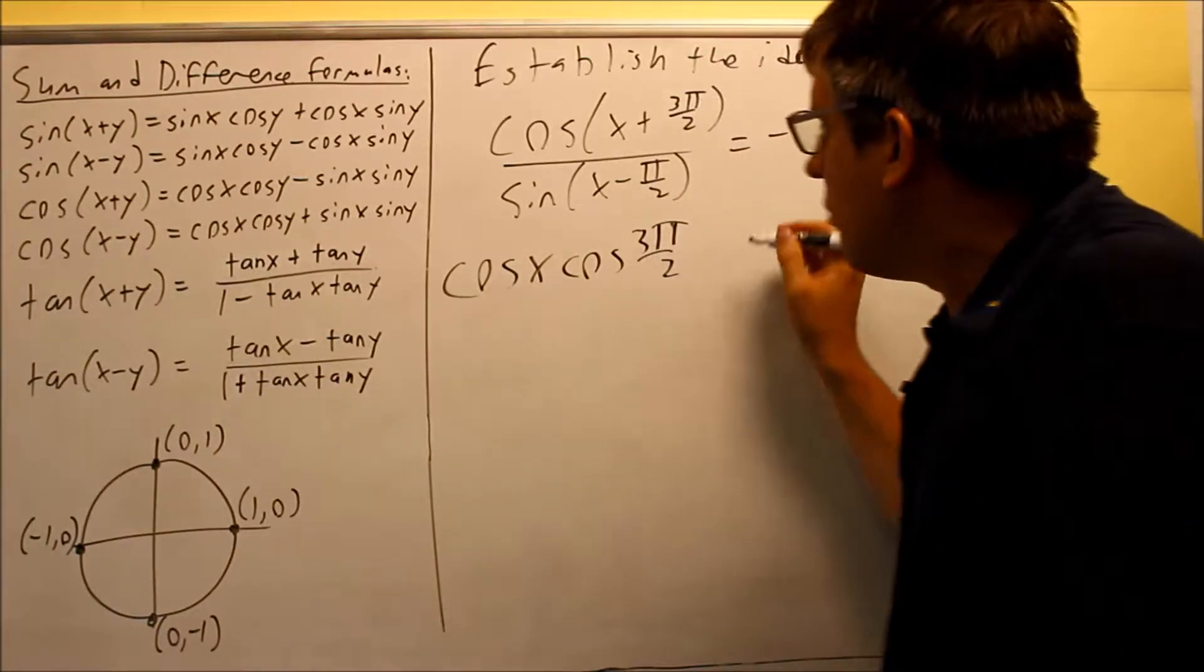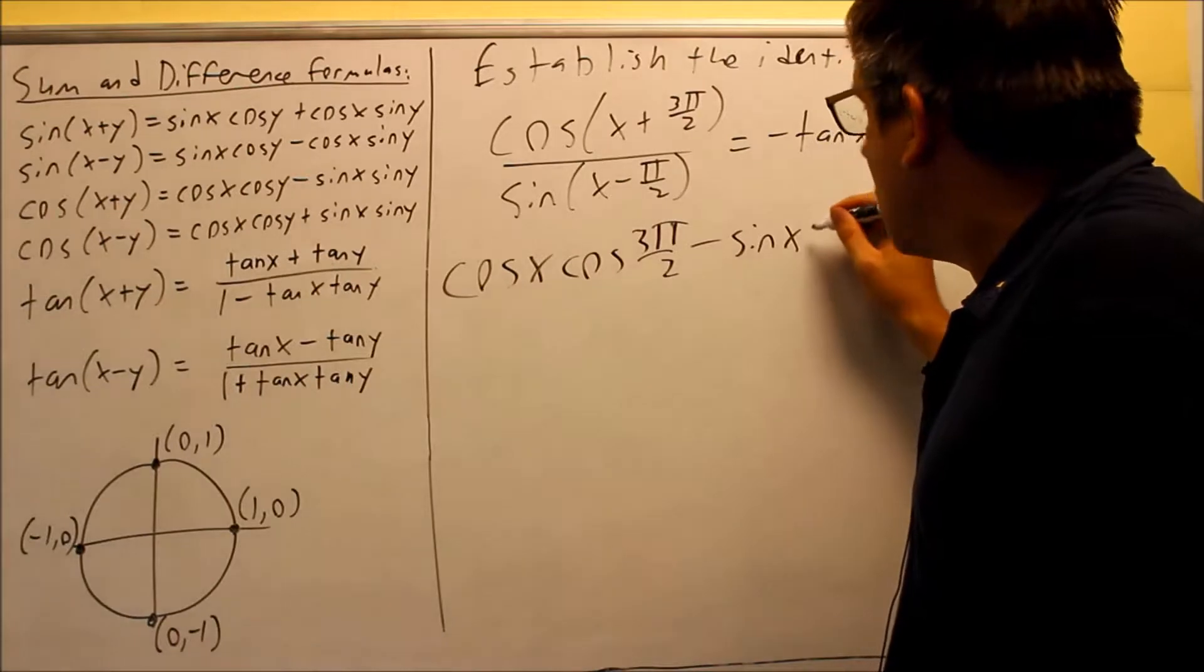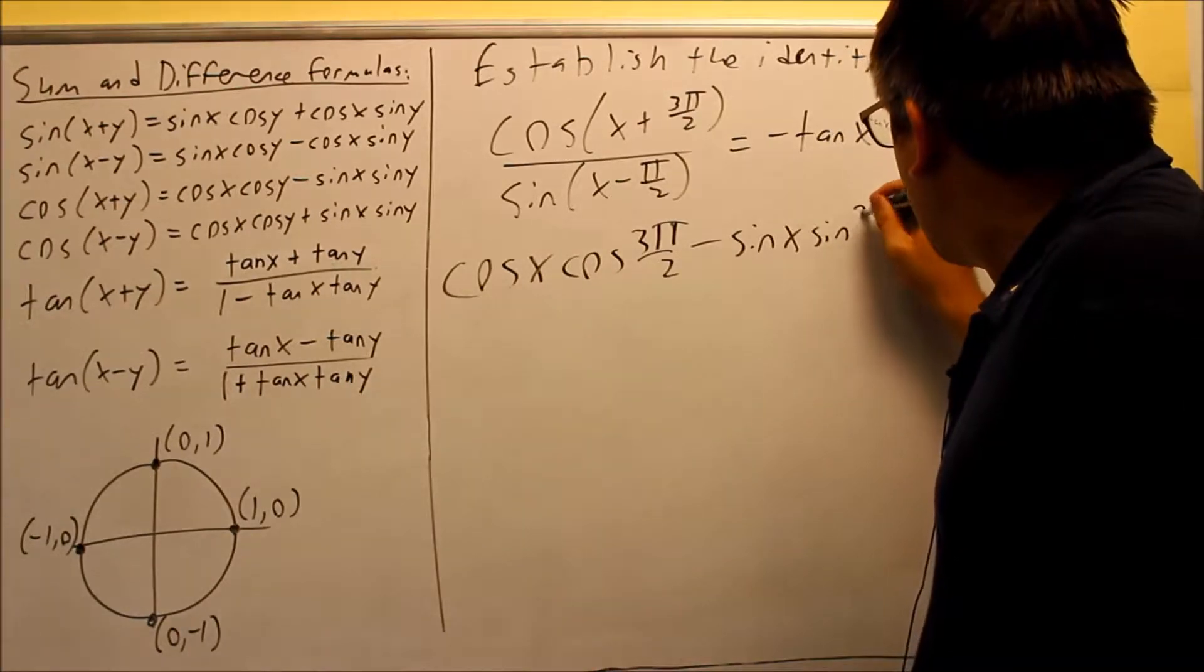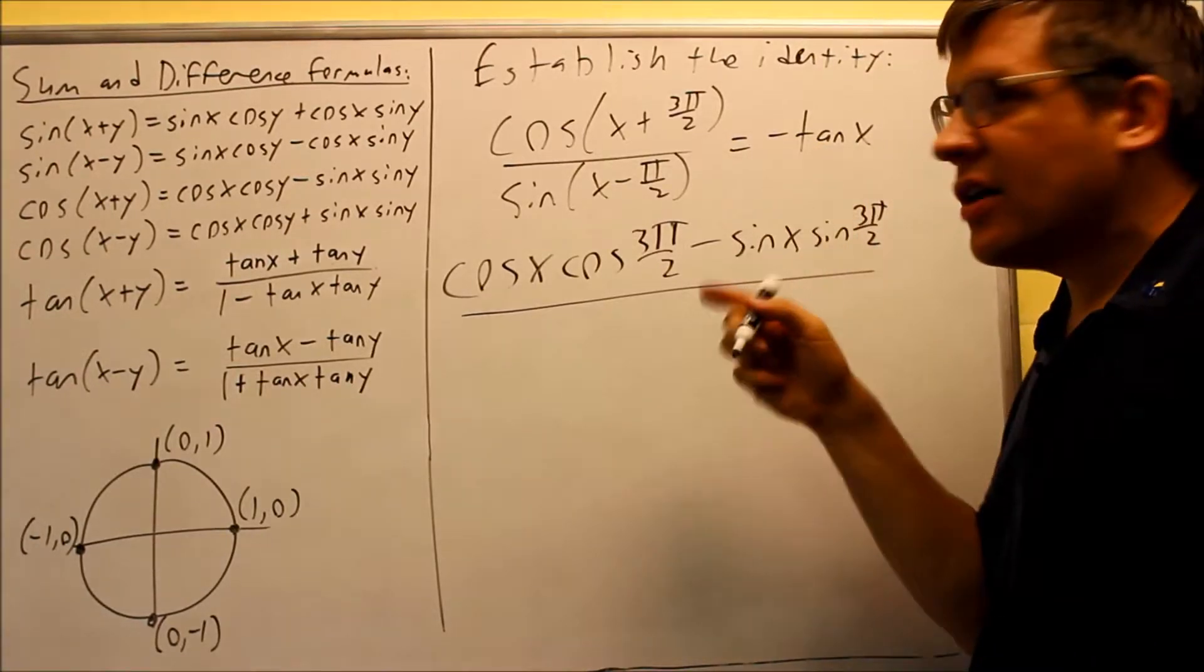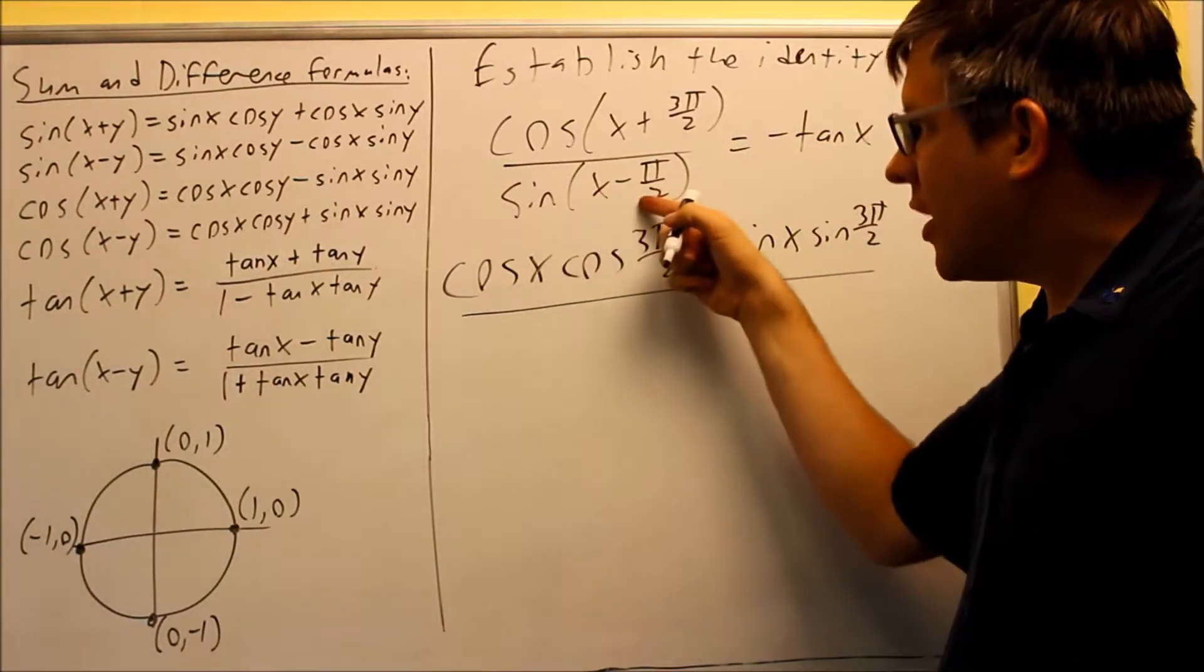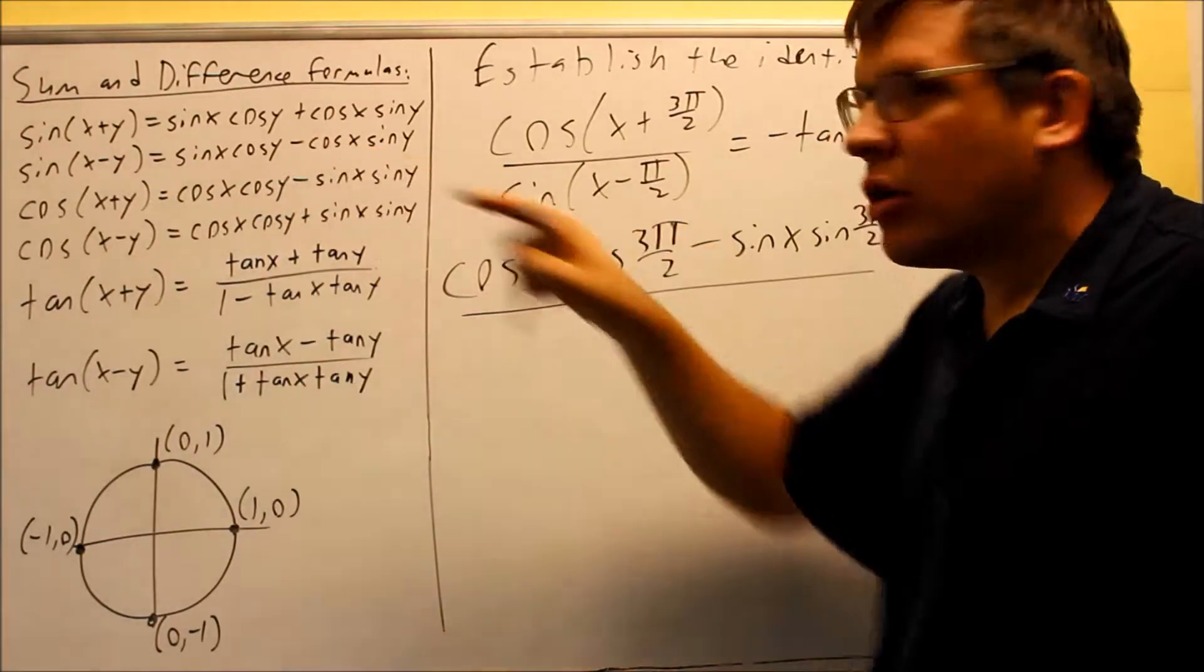And then we have a minus sign, sine x, and then we're going to do sine of 3π over 2. On the bottom, we're going to apply a separate formula for that. On the bottom, we have sine of x minus y. That's the second one right here.